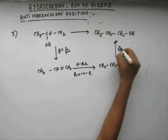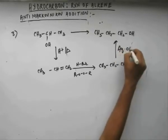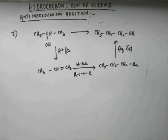If you take aqueous OH⁻, it will act as a nucleophile and go in, throwing out the bromide ion — which is very stable — out of the substrate. Aqueous OH⁻ is a nucleophile, so it will go for substitution.